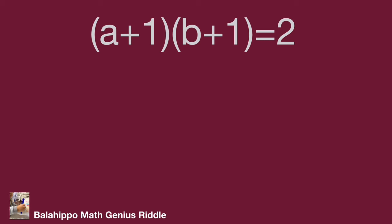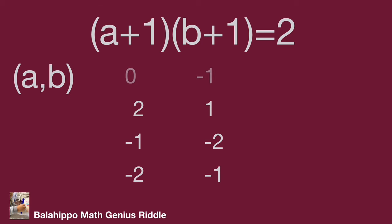Using the same approach, find the number groups for (a+1) and (b+1). The factor pairs are: 1×2, 2×1, and negative pairs (-1)×(-2), (-2)×(-1). So the number groups for (a, b) from this second case are: (0, 1), (1, 0), (-2, -3), and (-3, -2). That's all the values we find. Hope you enjoy the video. Thank you.